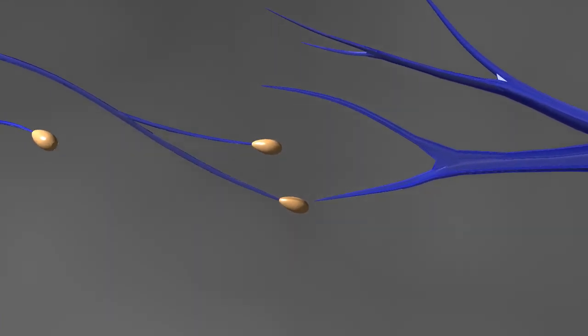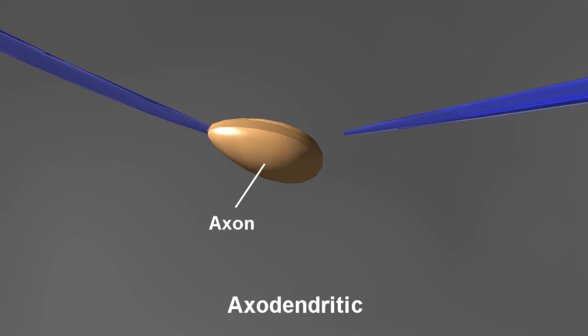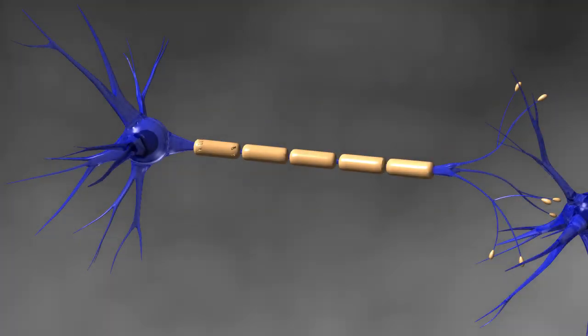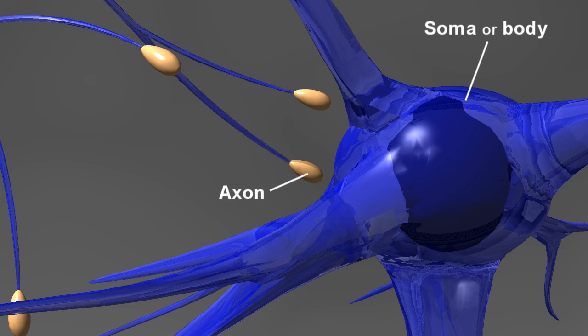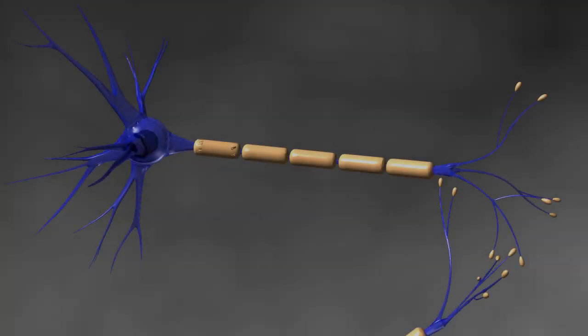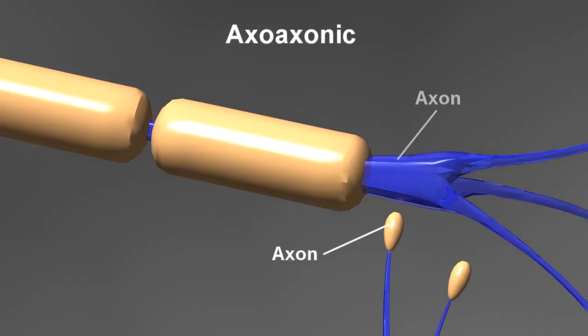This example is called axodendritic, where the axon of the first communicates with the dendrite of the second neuron. We can also have axosomatic, where the axon of the first communicates with the cell body of the second neuron. Finally, we can have axoaxonic, where the axon of the first communicates with the axon of the second neuron.